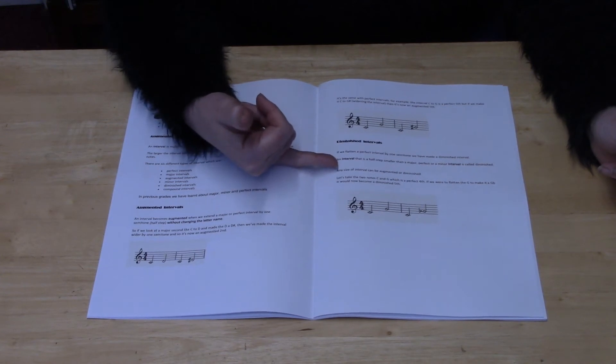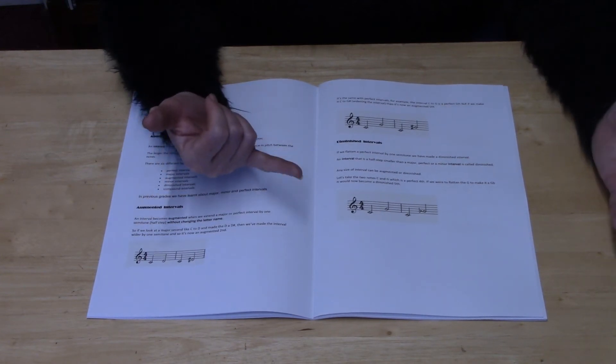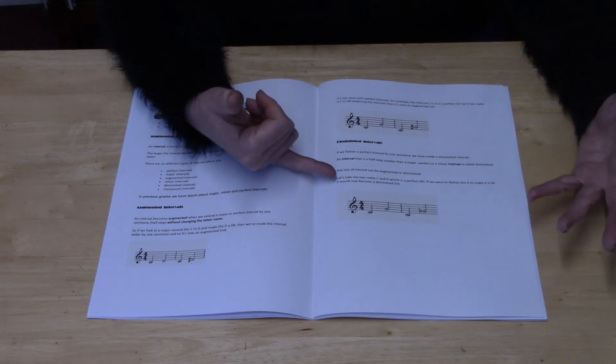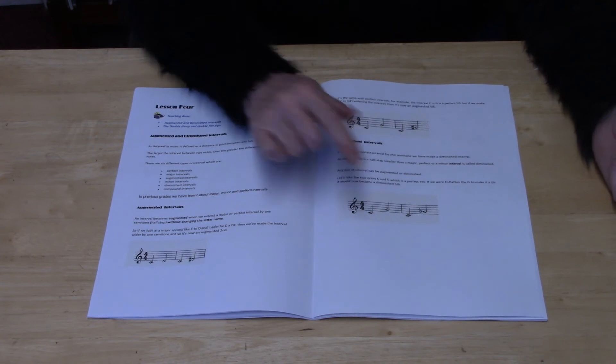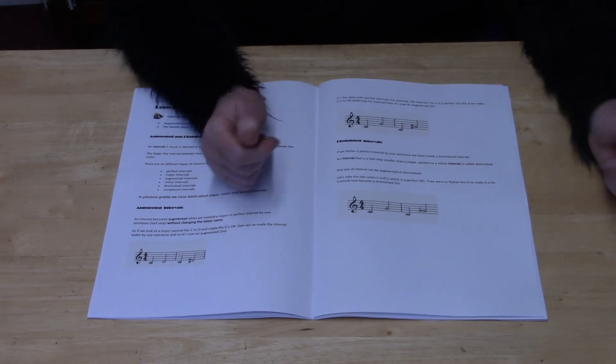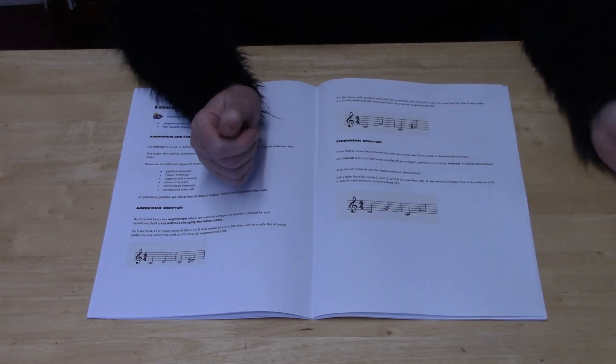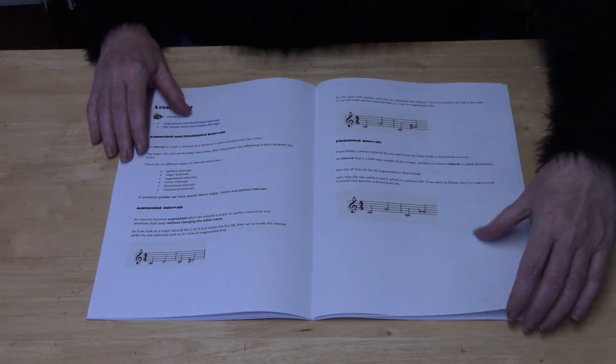Any size of interval can be used for augmented or diminished. Here's an example of a diminished fifth. You've got C to G, which is a fifth, but if you put a flat on it, C to G flat becomes a diminished fifth.